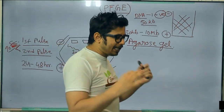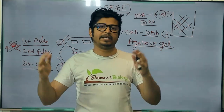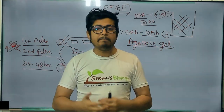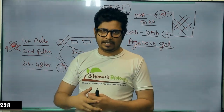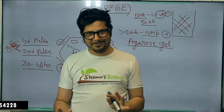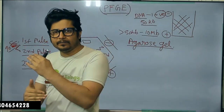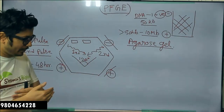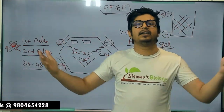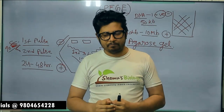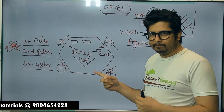This helps us to separate larger DNA fragments — more than 50 kb up to about 10 mb in length. But how does changing the electric field direction actually help segregate larger DNA fragments? The idea is that whenever the electric field is applied, the DNA needs to re-align itself to the new field direction.